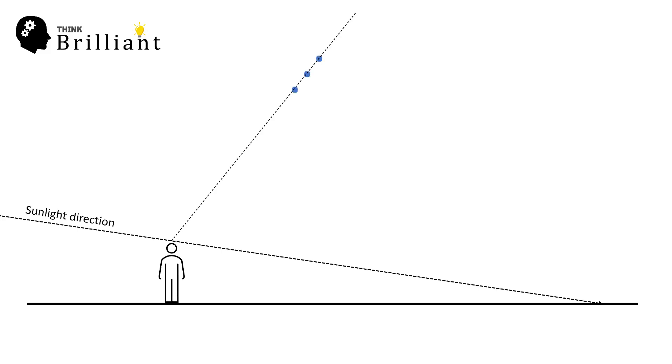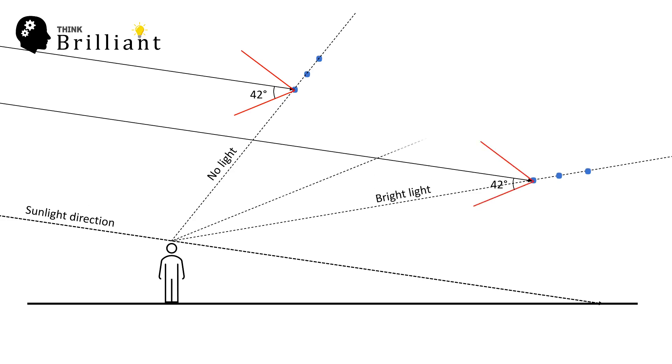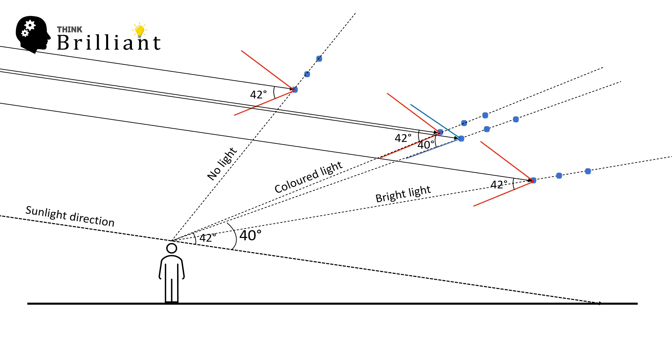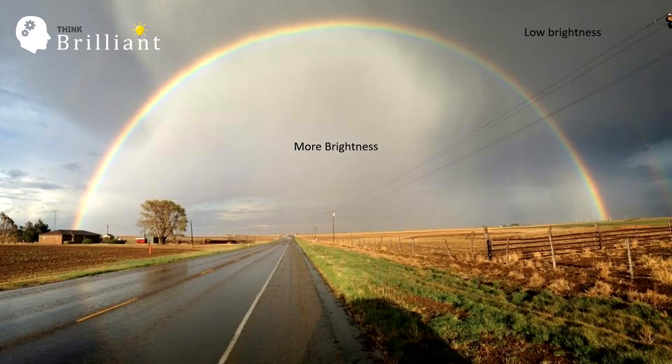Keeping all these in mind, let us assume a person standing on the ground and this be the direction of sunlight. Sun is behind the person. Now, when he looks at the water drops at an angle greater than 42 degrees, he could see no light. When he looks at angles less than 40 degrees, he observes a bright light. And when he looks at angles 42 degrees, he would see a red light. More interestingly, the blue light he sees in the rainbow is not reflected from the same water drop. It is from the other water drop looked at different angle of 40 degrees. With all these phenomenon, he could see this. A rainbow with a bright region below the rainbow and a less bright region above the rainbow.